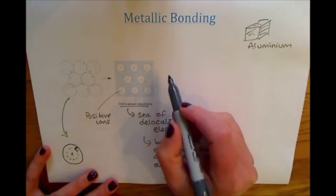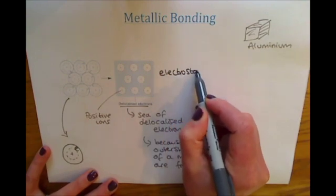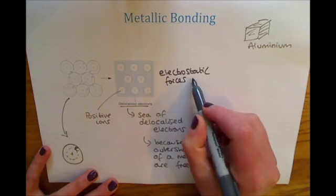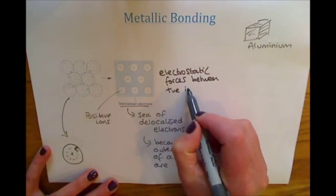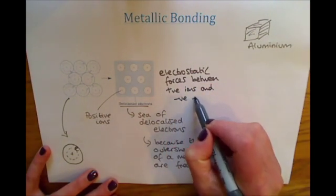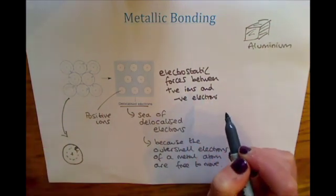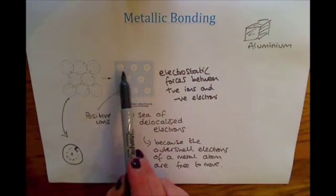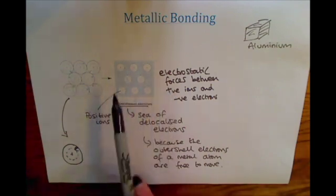Because you've got that positive and negative, you get electrostatic forces between the positive ions and the negative electrons, which holds everything together. If you were to draw metals, the positive ions should have that regular structure with the electrons around the outside.